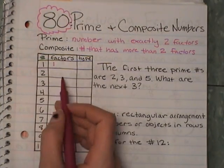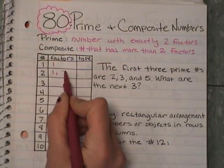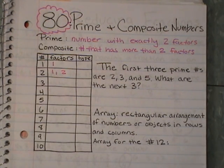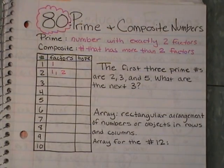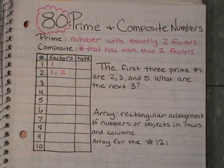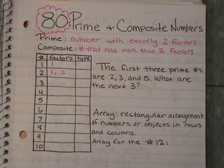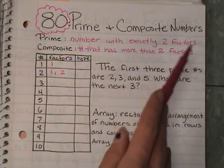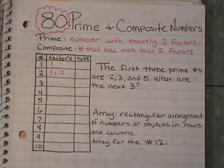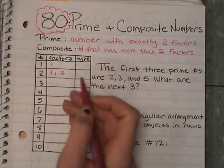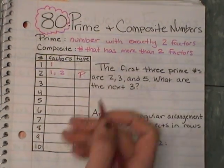The factors of 2 are 1 and 2. Remember how we did our upside-down rainbows? That's what you're doing when you're trying to find the factors — the two numbers multiplied together to equal your number. So we have 1 and 2. Because a prime number is a number with exactly two factors — 1 and itself — that makes 2 prime. I'm going to put a P for prime.